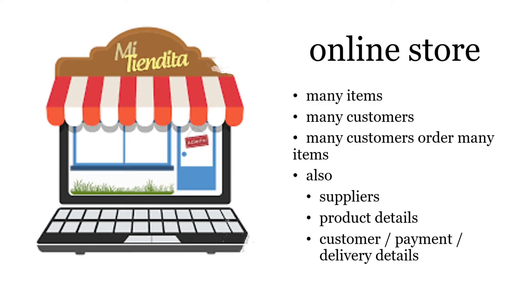Here's an example: an online store. There are many items, many customers, many customers that order many items. We've also got things like suppliers, product details, payments, delivery. There's quite a lot of information now. So we can store all that in a data dictionary.